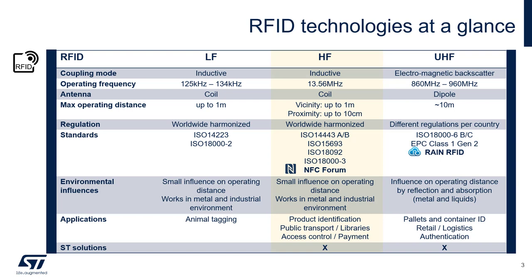HF, like LF, is also inductively coupled, but it operates at 13.56 MHz. The antenna is also a coil and is broken up into two categories: vicinity, which is less than 1.5 meters, and proximity, which is less than 10 centimeters. The regulation is also worldwide harmonized, and it's based on several ISO standards as well as NFC Forum. The main applications for HF are product identification, public transport, access control, and payment.